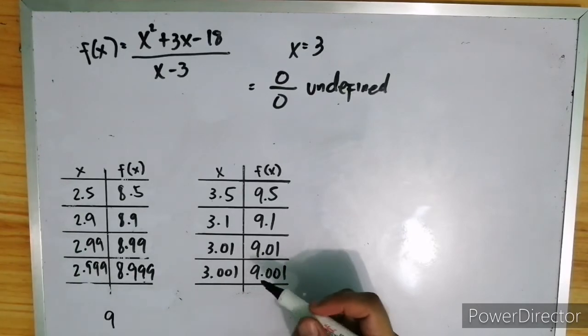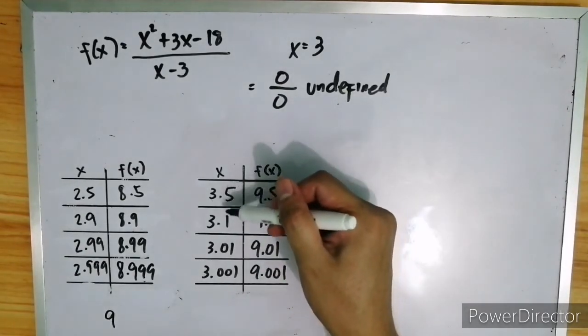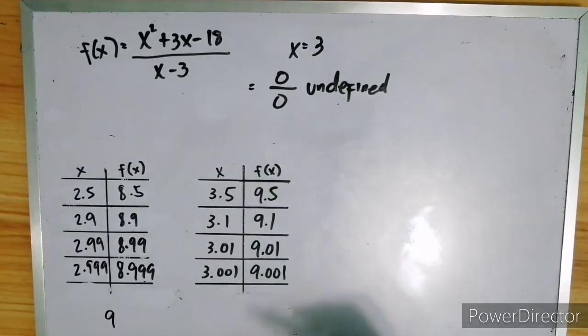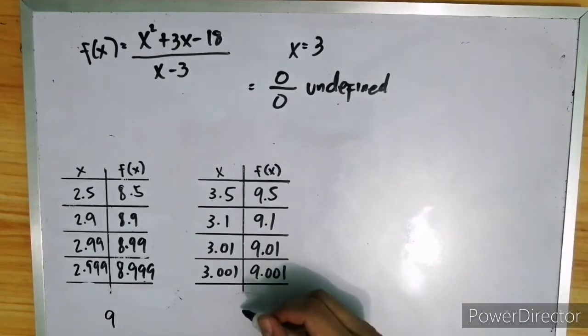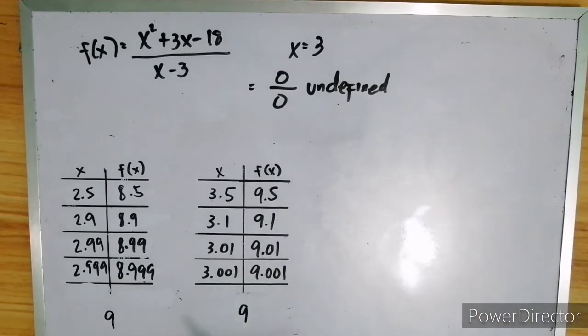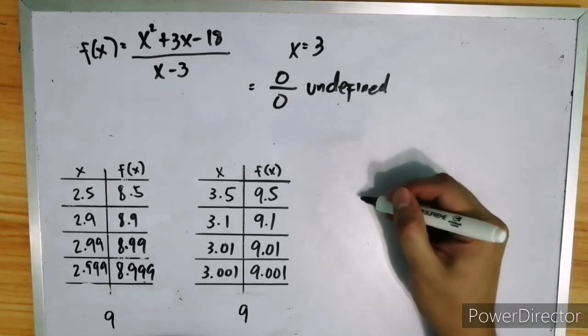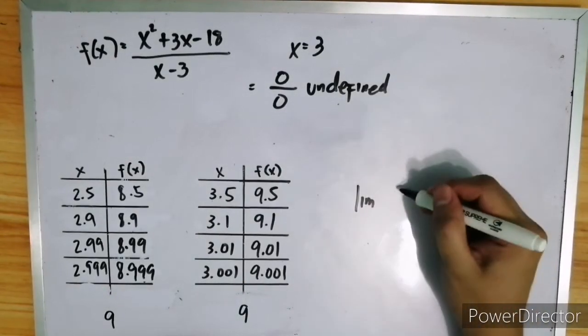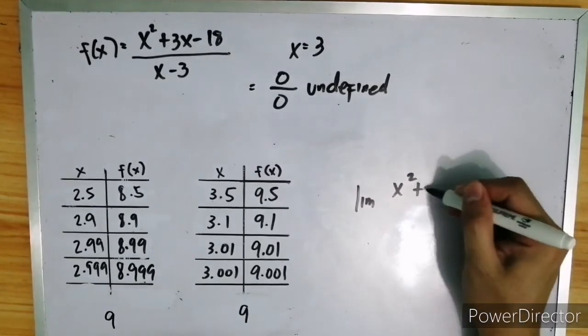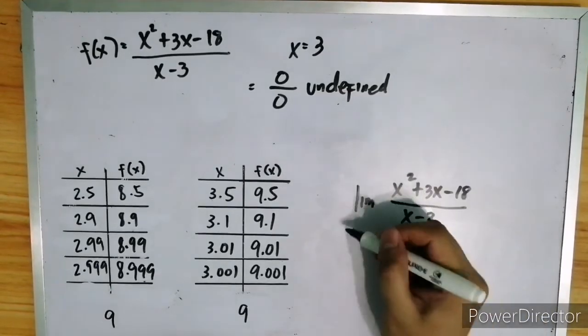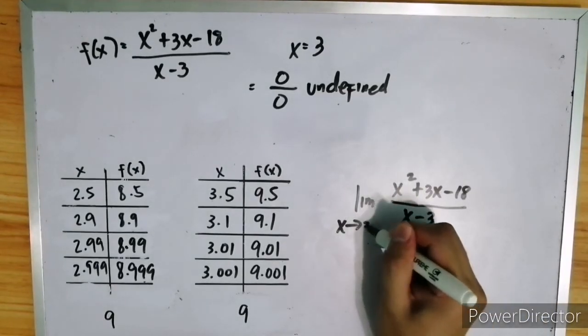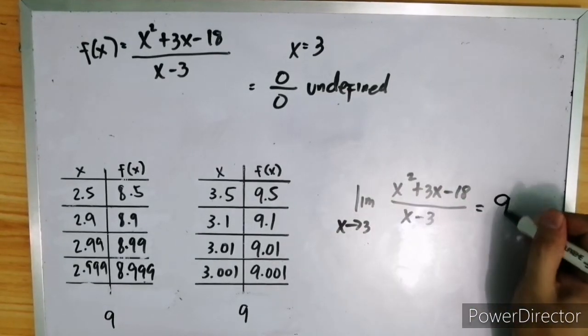So, again, as you can see, as x approaches 3 from the right side, the value of the function still gets closer and closer to 9. Therefore, we can say that the limit of the function x squared plus 3x minus 18 over x minus 3 as x approaches 3 is 9.